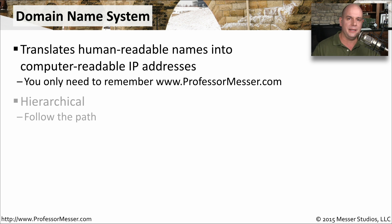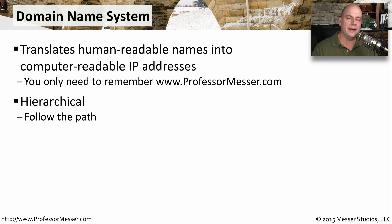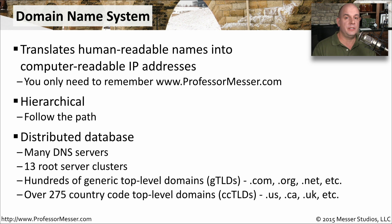The domain name system is hierarchical. That means that there is a top layer, and you move down through the layers from there. And when we look at a diagram of how the domain name system is laid out and the way that we resolve a name, it will become very clear how this hierarchy works. The domain name system is a very, very, very distributed database with servers that are located all over the world.